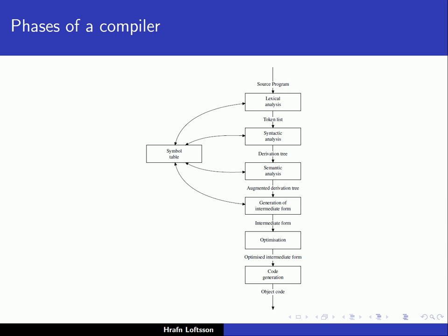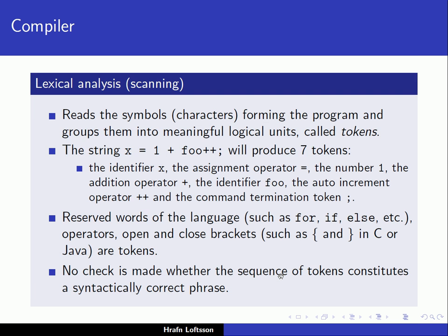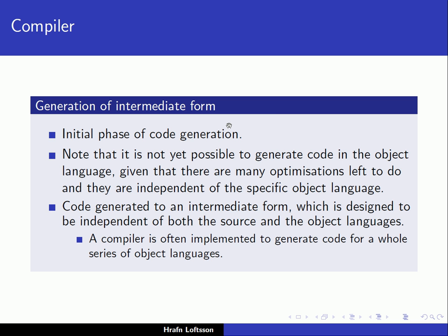Going back to the figure: after semantic analysis we have generation of intermediate form, then optimization, and finally code generation. Generation of intermediate form is the initial phase of code generation. Often, instead of generating the underlying machine code directly, we generate some kind of intermediate code — Java is an example of this. Even a compiler targeting a specific machine might generate intermediate code first and perform some optimizations on that intermediate code, since many optimizations are independent of the specific object language.